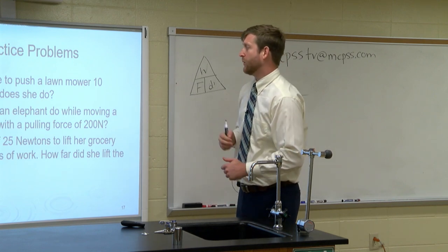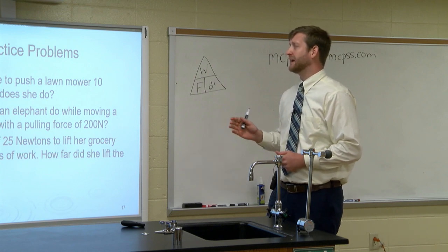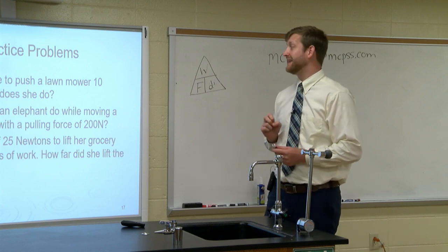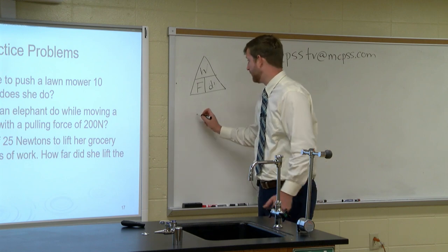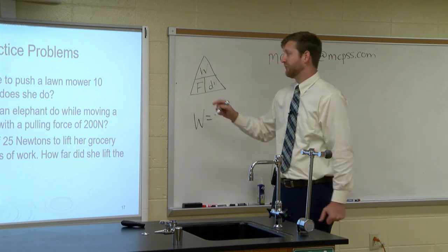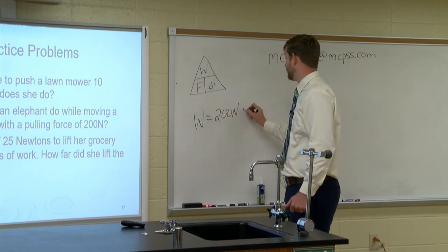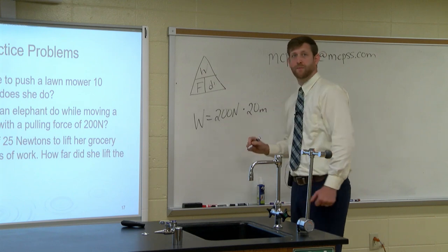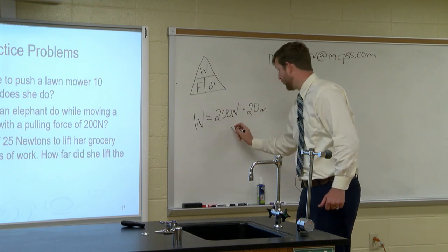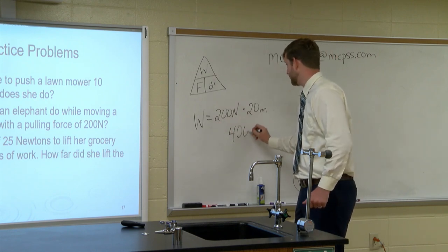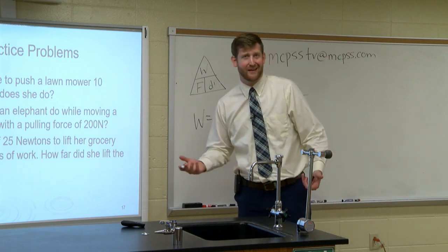Number two: How much work does an elephant do while moving a circus wagon 20 meters with a pulling force of 200 newtons? We have force equals 200 newtons and distance equals 20 meters. Work equals force times distance — two times two is four, carry your zeros — the work is 4,000 joules. Simple as that.